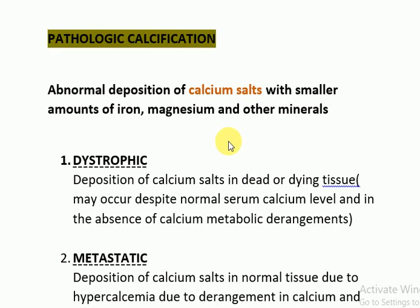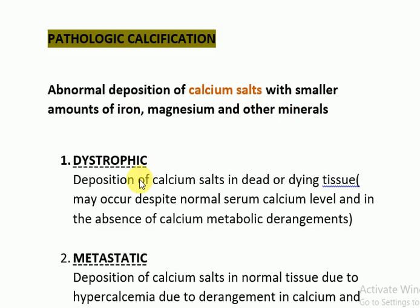Today's lecture is pathologic calcification. Pathologic calcification is the abnormal or pathological deposition of calcium salts, mainly with smaller amounts of iron, magnesium, and other minerals. It is of two types: dystrophic pathologic calcification or metastatic pathologic calcification.